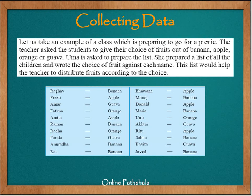The next topic in the chapter on data handling is how do we collect and record data? Let's take an example of a class preparing to go for a picnic. The teacher asked students to give their choice of fruits out of banana, apple, orange, or guava. Oma is asked to prepare the list, writing each child's name with their fruit choice against it. This list would help the teacher distribute fruits according to their choice.